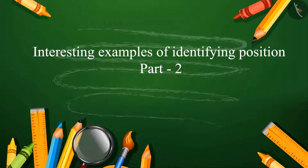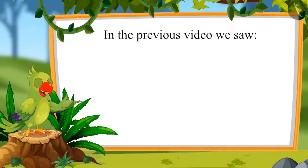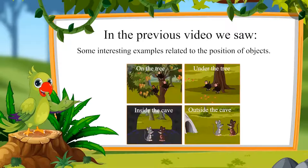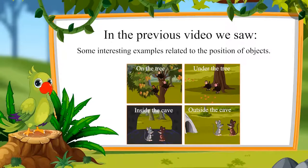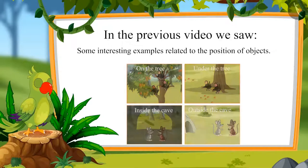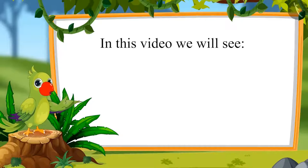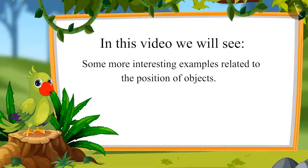Interesting Examples of Identifying Position Part 2. Children, in the previous video we saw some interesting examples related to the position of objects using terms such as on, under, inside, outside. In this video we will see some more examples related to the position of objects.